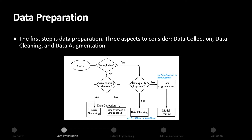The first step in the ML pipeline is data preparation. There are three aspects: data collection, data cleaning, and data augmentation. First, we need to collect data if we don't have enough. For data collection, cost is a crucial factor. Therefore, we will always search for a proper existing dataset first, or modify those datasets to meet our requirements. If there is no proper dataset, we will synthesize or label our own data.